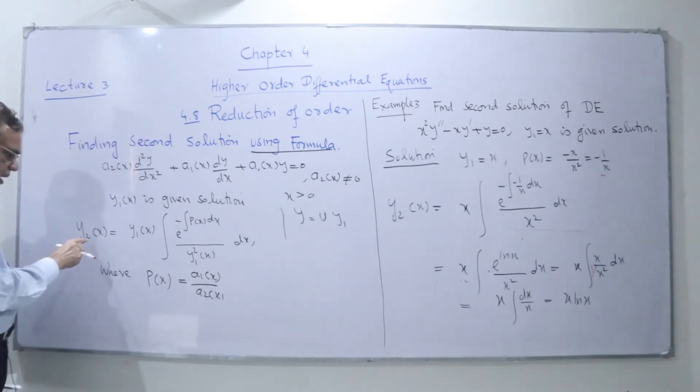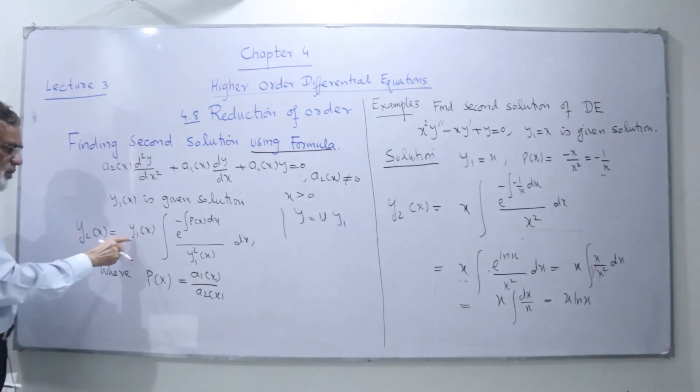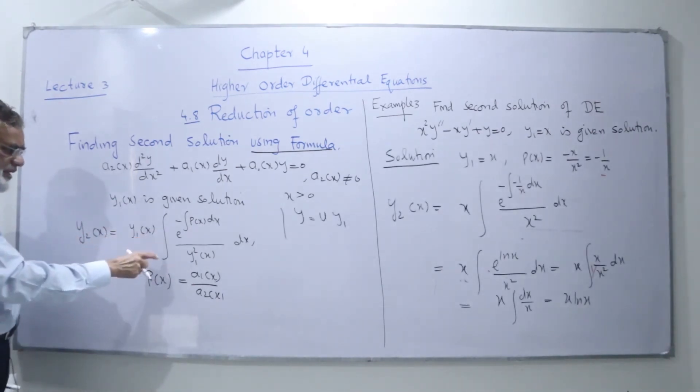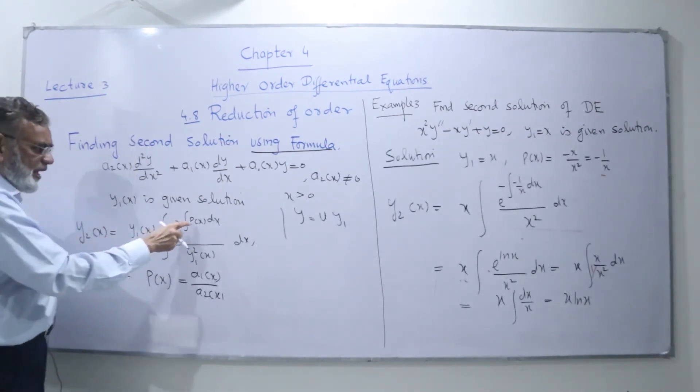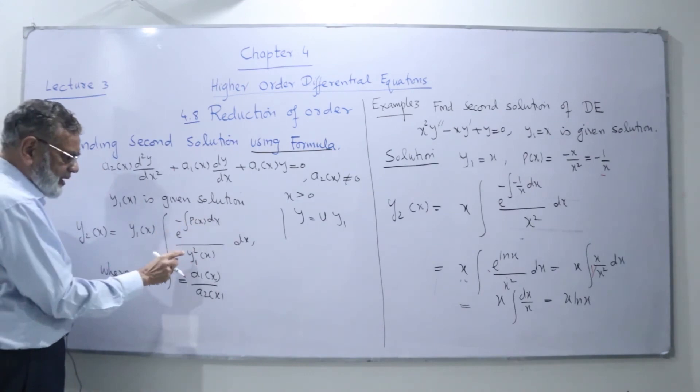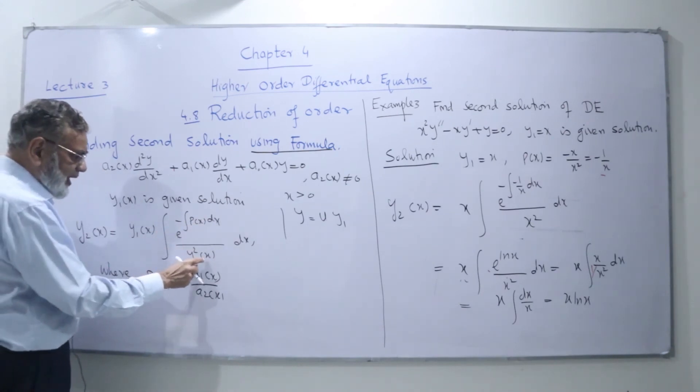We have the formula: y2(x) is equal to y1(x) times the integral of e to the power of minus the integral of p(x) dx, divided by y1 squared of x, dx.